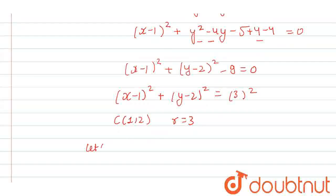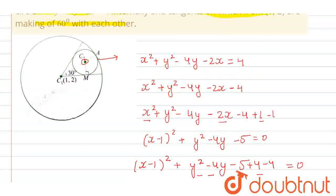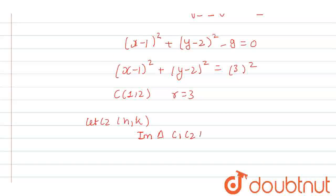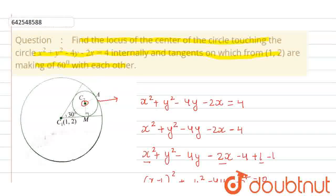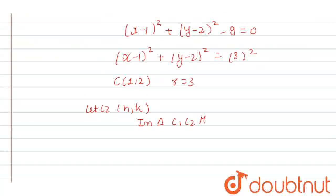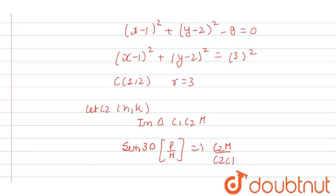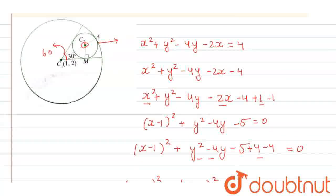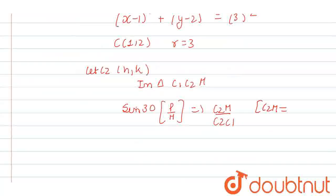We have taken the center of the second circle to be (h, k). Now, in triangle C1C2M, the tangents are making an angle of 60 degrees, so the half angle will be 30 degrees. Here we will write down sine 30, and we know that sine theta equals perpendicular upon hypotenuse, where the perpendicular is C2M divided by C2C1. We can write C2M as the radius, since both are radii.